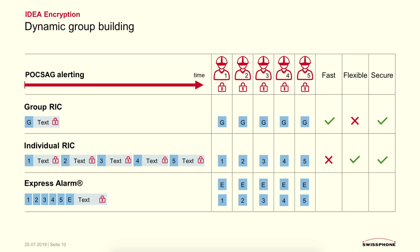In the end, all three methods can be easily combined with IDEA. So if you want secure paging, you can simply encrypt the text messages. You can encrypt text messages using either group RIC or individual RIC, but express alert can also be encrypted. In the end we have Express Alarm, which is a fast, flexible, and secure way of alerting.